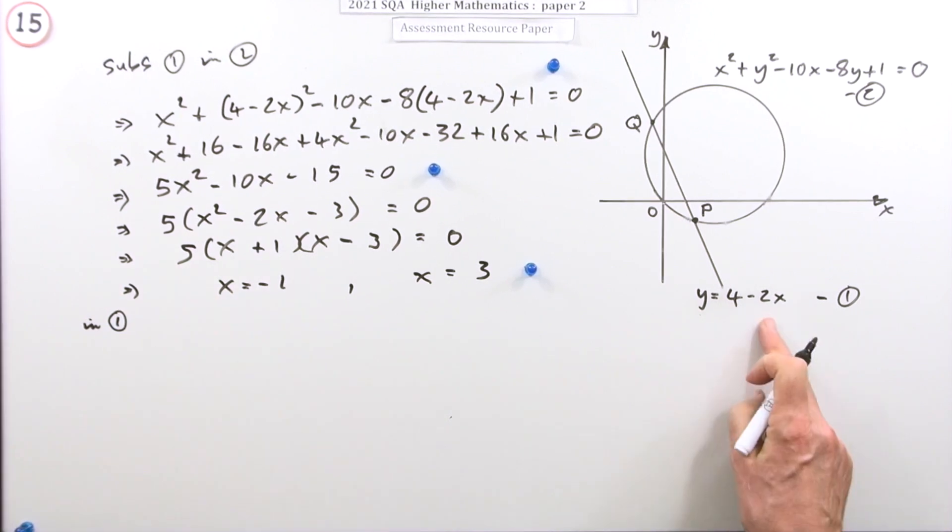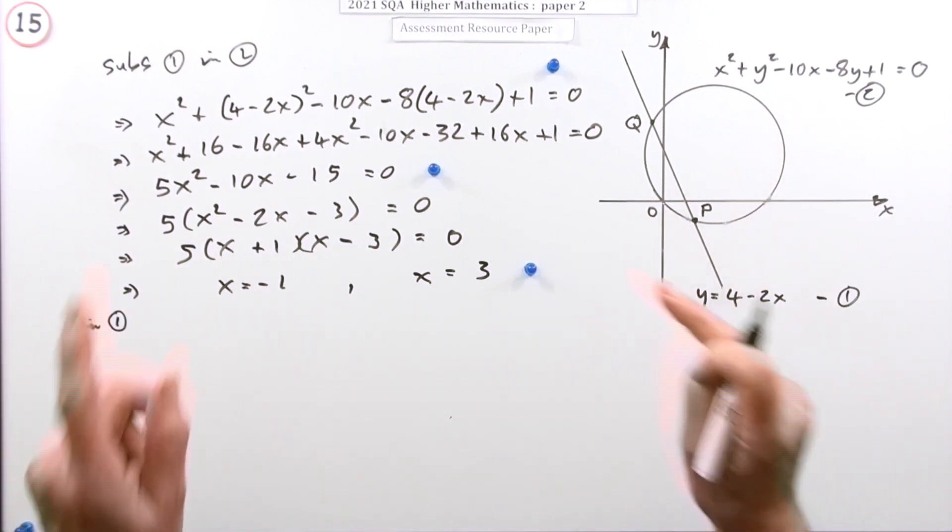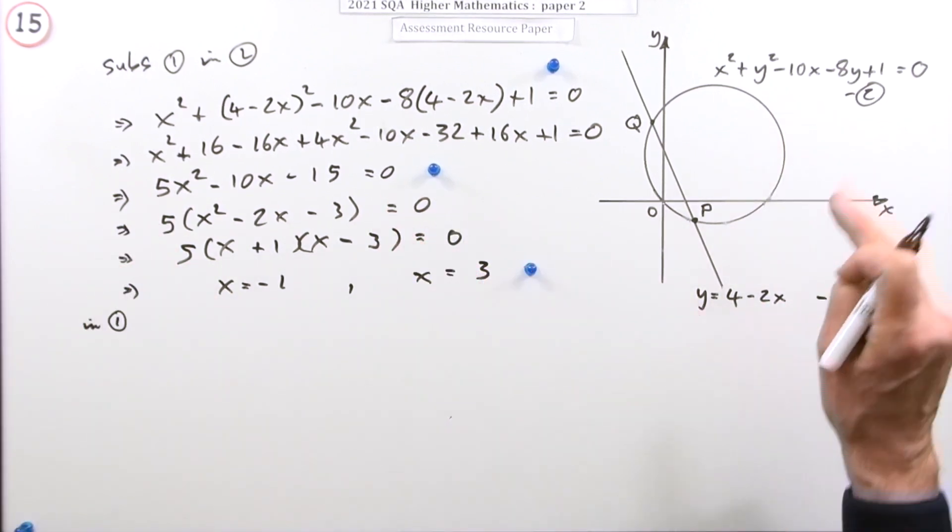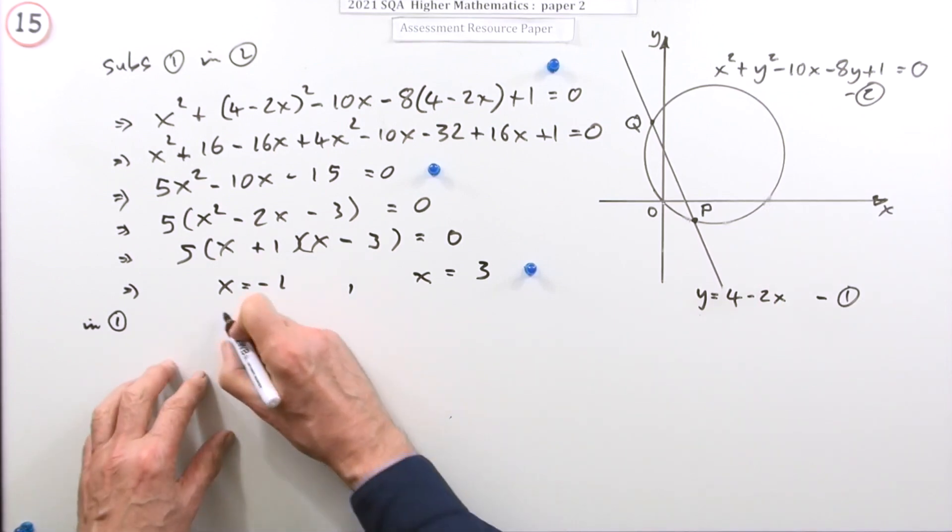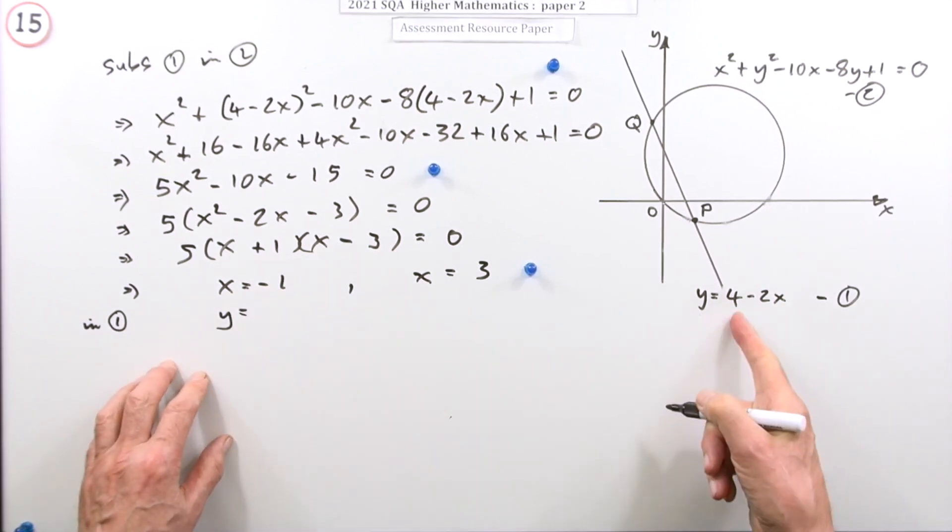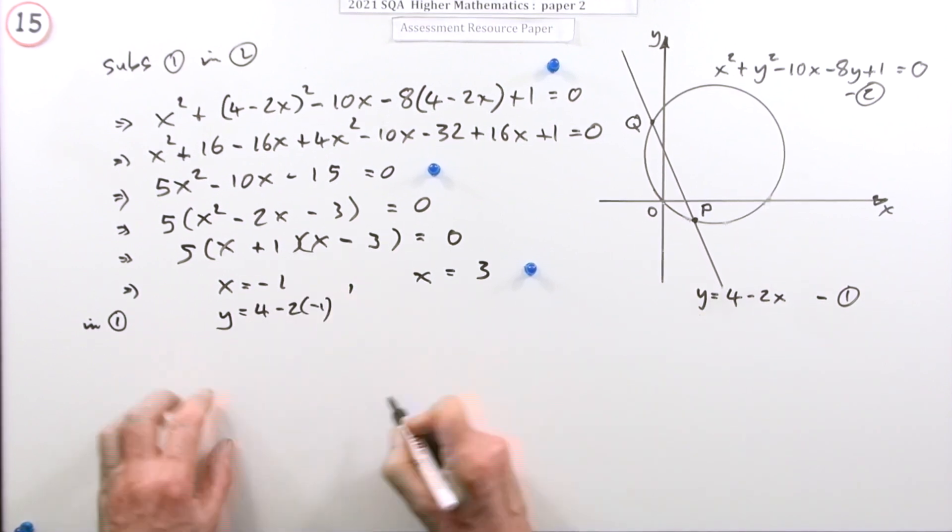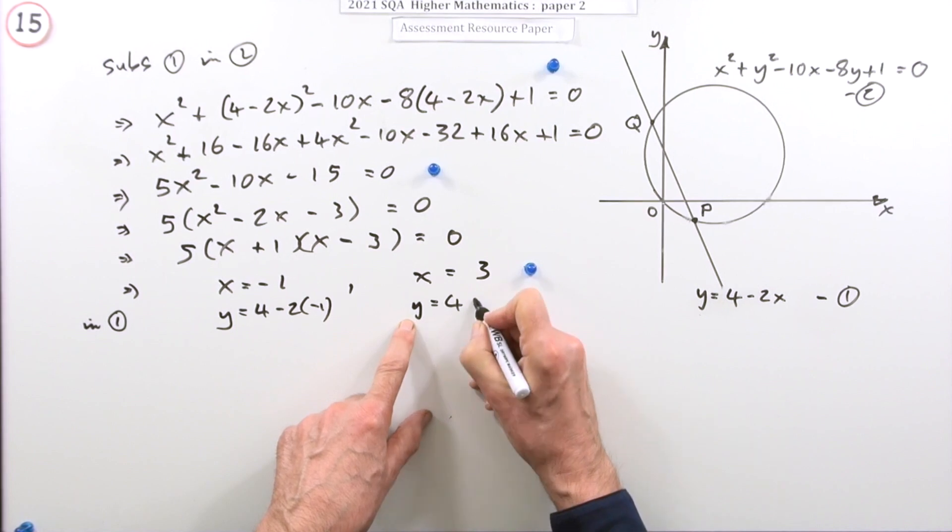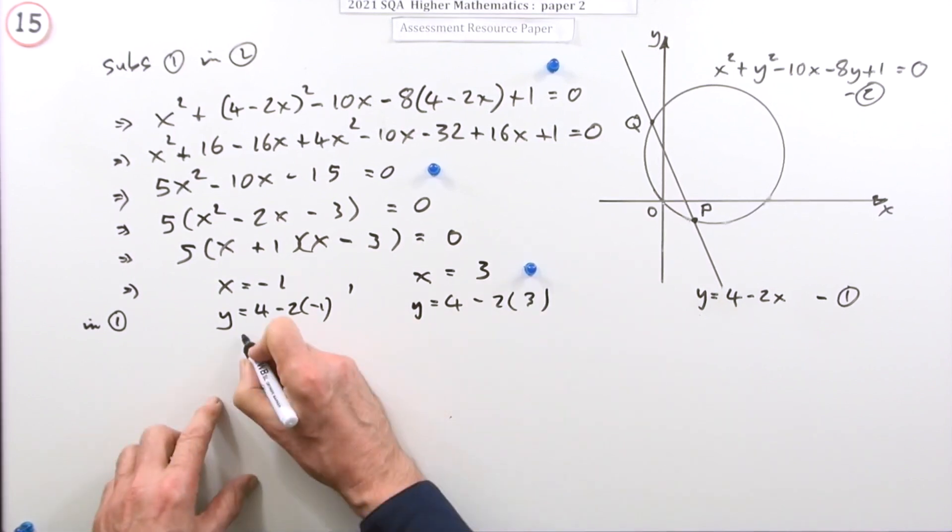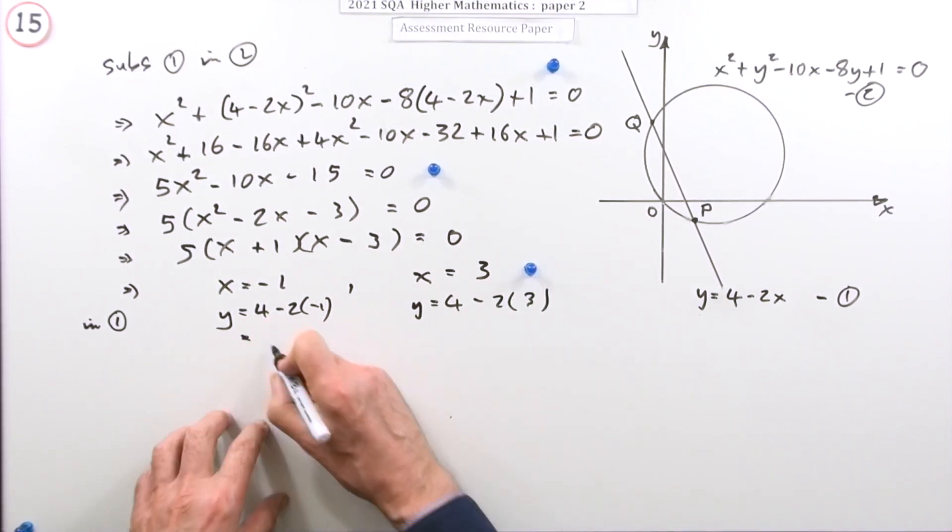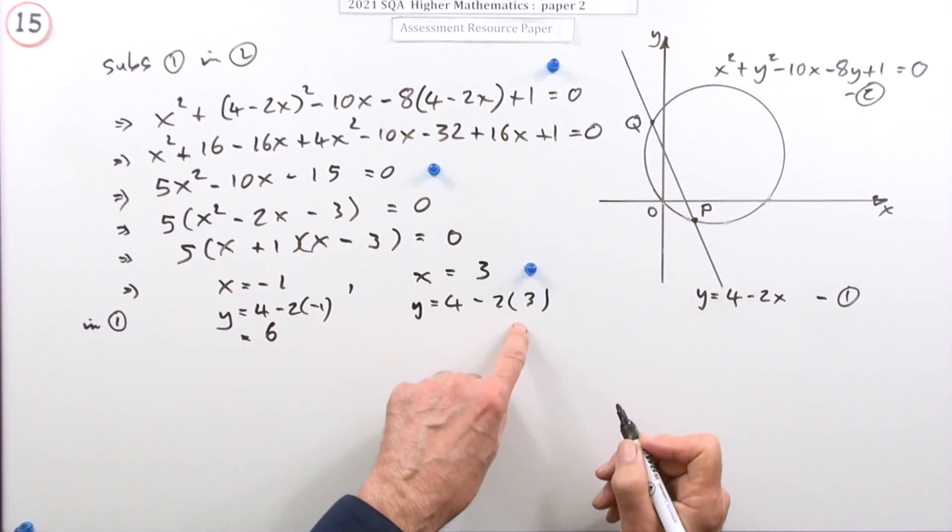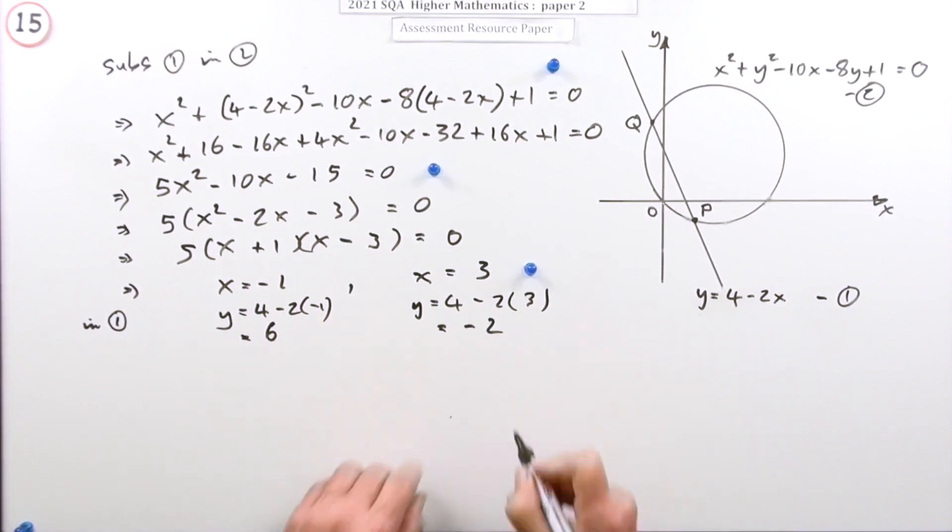And then there'll be a mark for putting them in and finding the y coordinates. So I'm going to put them into equation 1, which you should do. But you could put them into either, because remember what you've done is you've found the points that belong on them both. So putting that into 1 would read 4 minus 2 times whatever. 4 minus 2 times negative 1, I'll do this at the same time, 4 minus 2 times 3. So it's 4 plus 2 is 6, and it's 4 minus 6 which is negative 2.